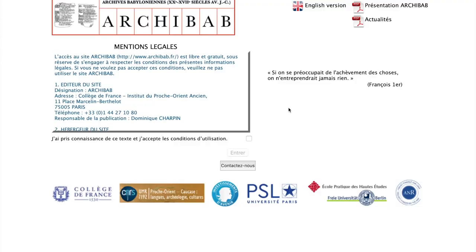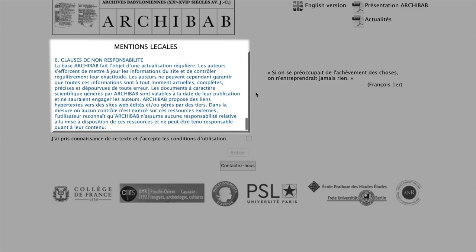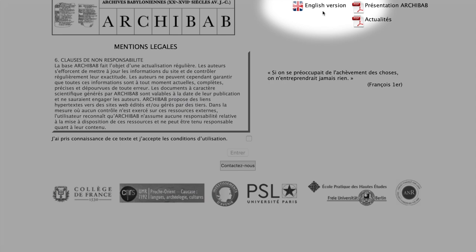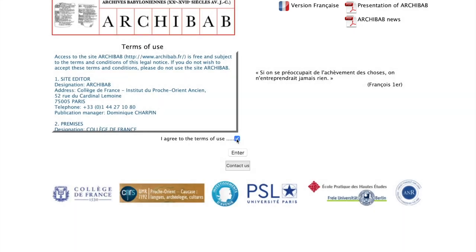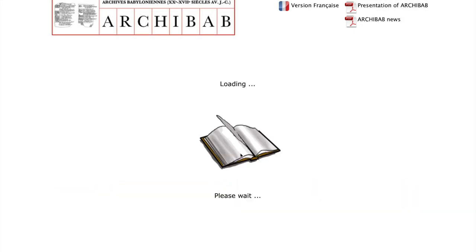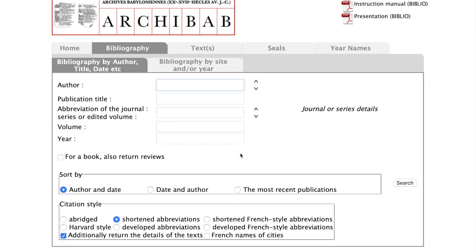Archibab is the ideal place for finding Old Babylonian primary sources and secondary literature. This is a project hosted at the Collège de France, with more information on the developers and contributors to be found when you first open the website. The default language option is French, but one can also choose English in the top right-hand corner, and most functions are available in both languages. In the following, we will lead you through the most important functions, especially the various search functions that are available.